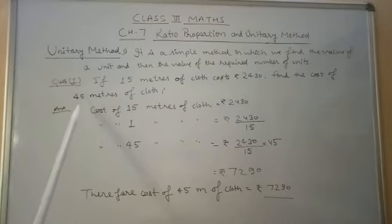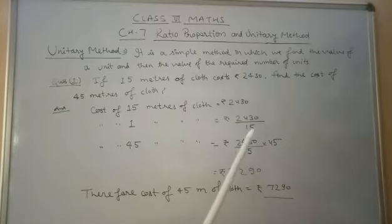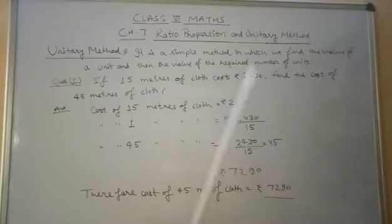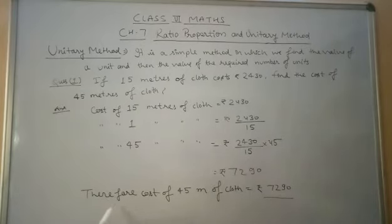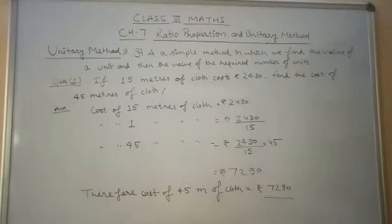Then we find the 45 meters of cloth, that is 2430 divided by 15 into 45. So we get 7290 rupees. Therefore, the cost of 45 meters of cloth is 7290 rupees.